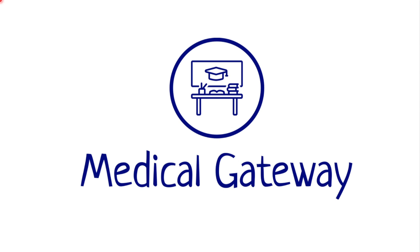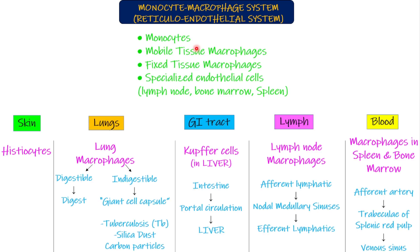Hello everyone, this is Medical Gateway. In this part we're going to study the monocyte macrophage system, which is also known as the reticuloendothelial system. All the monocytes and macrophages in the body are collectively known as the monocyte macrophage system — all the monocytes and macrophages present in skin, lungs, GI tract, lymph, and blood.